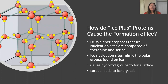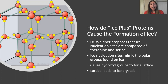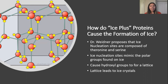So how do ice plus proteins cause the formation of ice? Dr. Wietner proposes that ice nucleation sites are composed of threonine and serine, and these are just amino acids in the bacteria. Ice nucleation sites mimic the polar groups found on ice, and they cause hydroxyl groups to form a lattice, and the lattice leads to ice crystals.